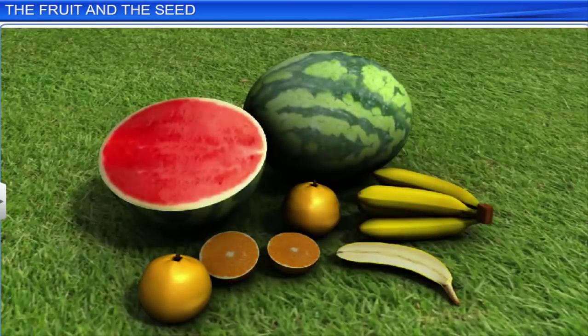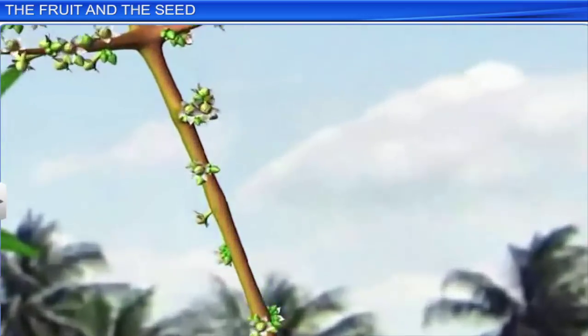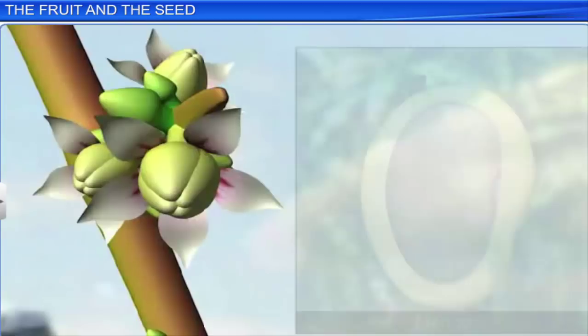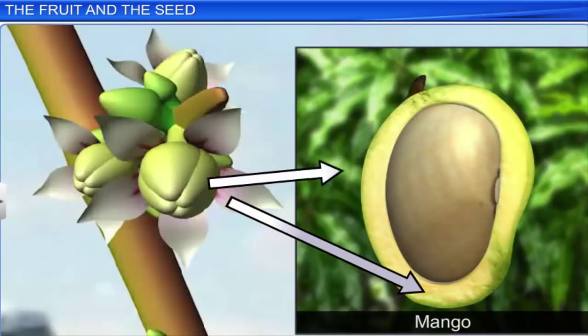Parthenocarpy can be a natural process or may be artificially induced. Once fertilization takes place in a flower, the ovary ripens to form the fruit and the ovules form the seeds.